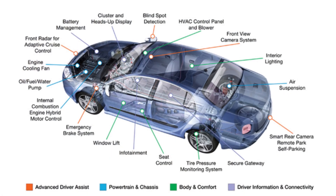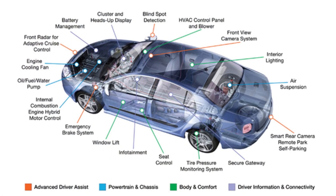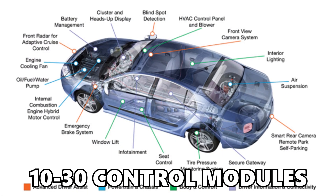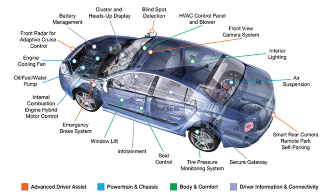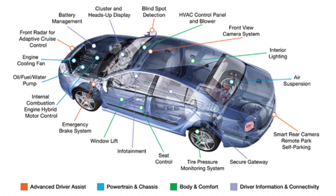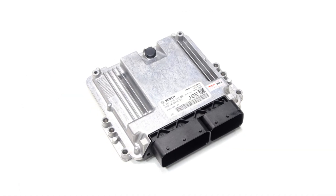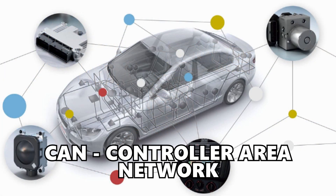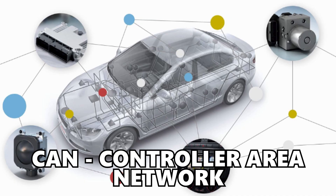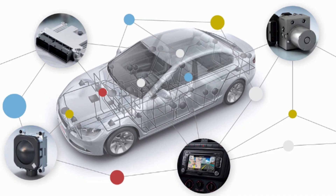Most modern vehicles will have somewhere in the ballpark of about 10 to 30 control modules, in some cases even more. These control modules are essentially mini computers. All of these computers and control modules communicate over the CAN, or Controller Area Network, also known as CAN bus.